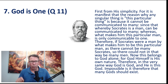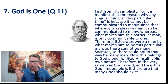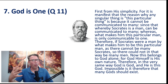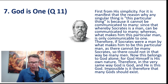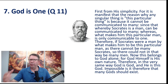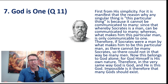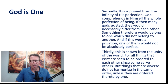'Whereas what makes him this particular man is communicable only to one. Therefore, if Socrates were a man by what makes him to be this particular man, as there cannot be many Socrates, so there could not in that way be many men.' So if Socrates was the only person that had human nature and it was unique to him, there could only be one human being. 'This belongs to God alone, for God himself is his own nature. Therefore, in the very same way God is God and he is this God — impossible it is, therefore, that many gods should exist.' Some may say this is circular if you don't already accept his simplicity, and that's fair enough — let's go on to the second reason.